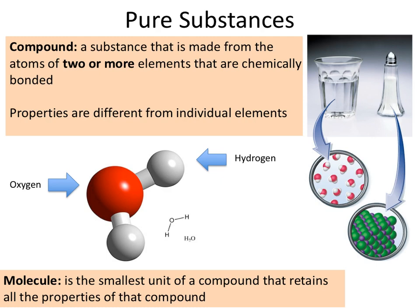A great example of this is water. A water molecule is a single oxygen and two hydrogen atoms, H2O, covalently bonded to one another. We know water at room temperature is usually in a liquid phase. But if we look at the individual elements that make up this compound — hydrogen and oxygen — both of these are actually gases at room temperature.